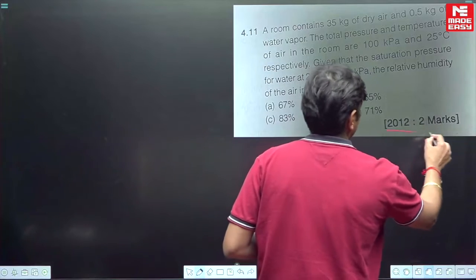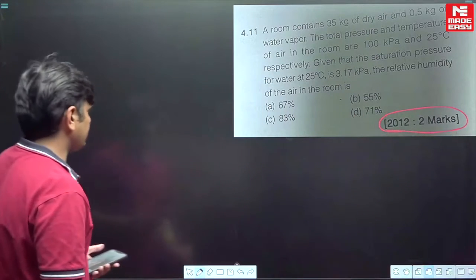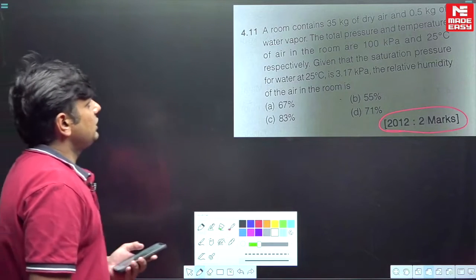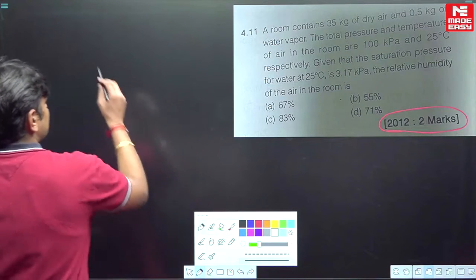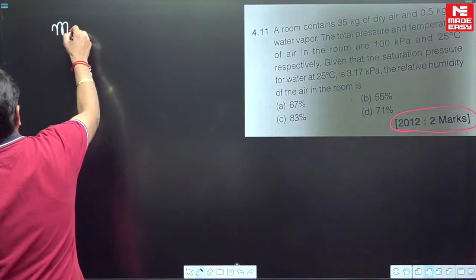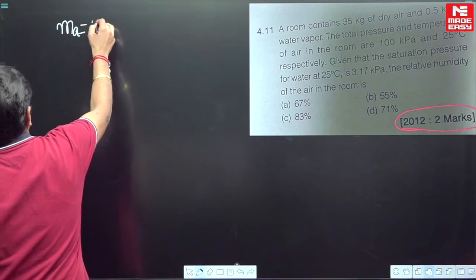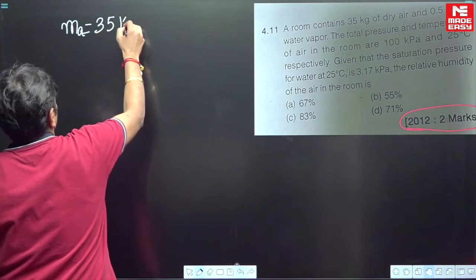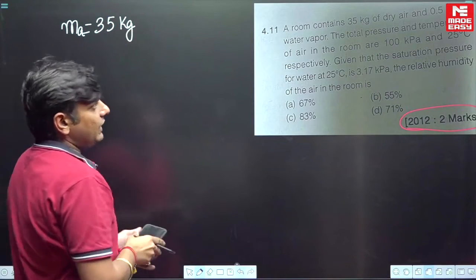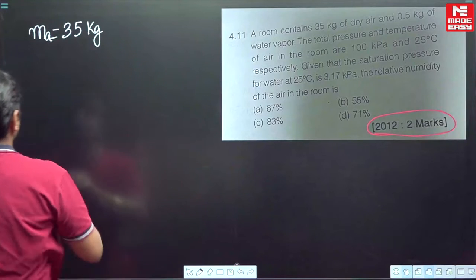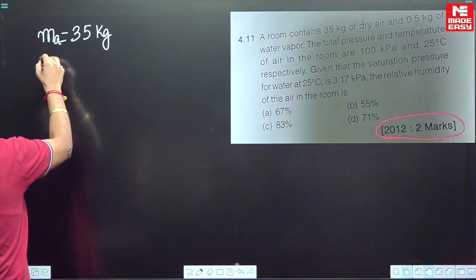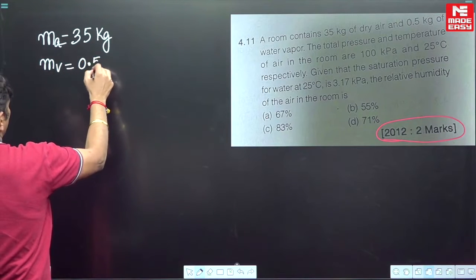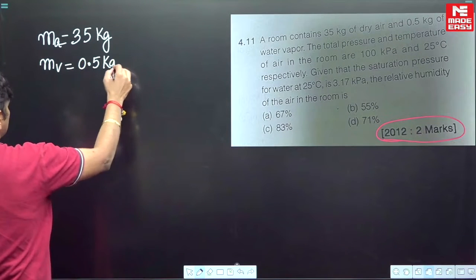Now I will discuss one variety of question. This was a GATE 2012 two-marks question. The given data: a room contains 35 kg of dry air and 0.5 kg of water vapor. From this data itself you can understand what information is being given.